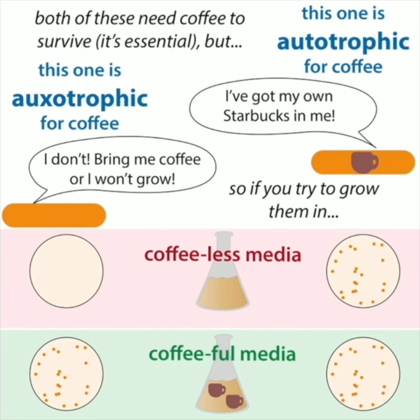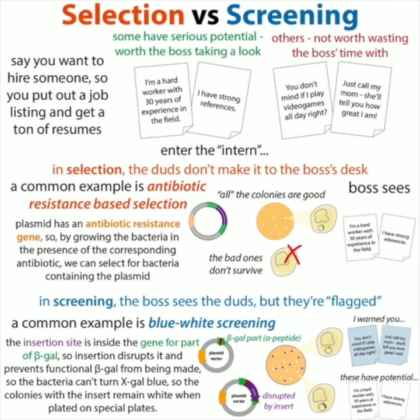This auxotrophic selection is actually the basis for the Ames test for mutagenicity. You can also add things like antibiotics to plates, which allows for selection — only bacteria that have the plasmid containing the antibiotic resistance gene will be able to grow. We can also add things to media for screening. With screening, all bacteria that have the antibiotic resistance gene can grow, but they'll look different if they have some property, like the presence of an insert, as with blue-white screening. With selection you're weeding out ones you don't want; with screening you're flagging them. In blue-white screening, if your gene got into the plasmid it disrupts the gene for making the blue product, so those colonies appear white whereas others appear blue.